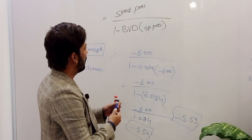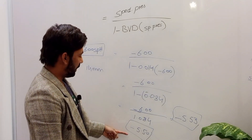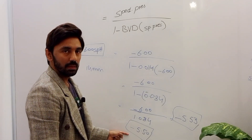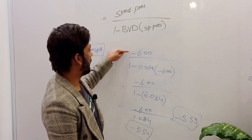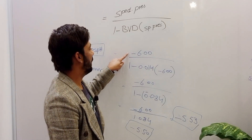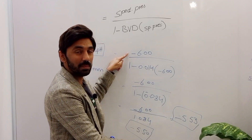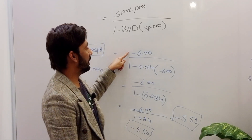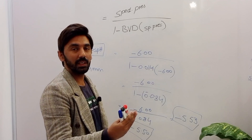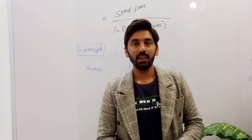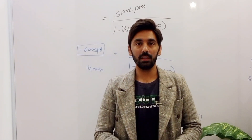Our spectacle correction was minus 6.00, and the contact lens prescription is minus 5.50, which is less than the spectacle correction. So we conclude: if the spectacle correction is in minus, the contact lens prescription will be less than the spectacle correction; and if it is in plus, the contact lens prescription will be more. In the next video, we will discuss how to convert a toric spectacle prescription into a contact lens prescription.